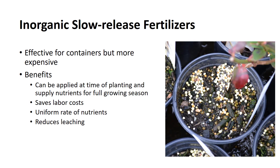Slower controlled-release fertilizers are very effective in the production of container-grown plants. They are relatively more expensive per unit than natural organic fertilizers, but because of their release rate, they have a number of advantages. They can be applied at the time of planting and supply the needed nutrients for a full growing season, thus eliminating the labor needed for additional applications of fertilizer. This can result in a considerable savings in labor, offsetting the increased cost of slow-release fertilizer. They can supply nutrients at a fairly uniform rate, so plant growth is not limited by excess soluble salts or by low nutrient levels as a result of leaching.